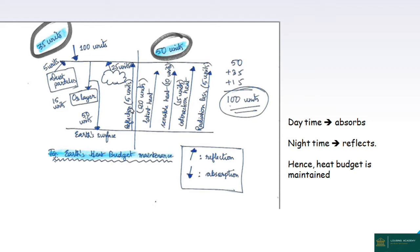Of the 50 units absorbed by the Earth's surface: latent heat accounts for 20 units — this is the heat required to convert solid to liquid or liquid to gas and vice versa, the phase change occurring without a change in temperature. Sensible heat accounts for 10 units — this is the heat that can be felt or sensed. Then there is conduction: 10 units, the transfer of heat between containers at different temperature levels.